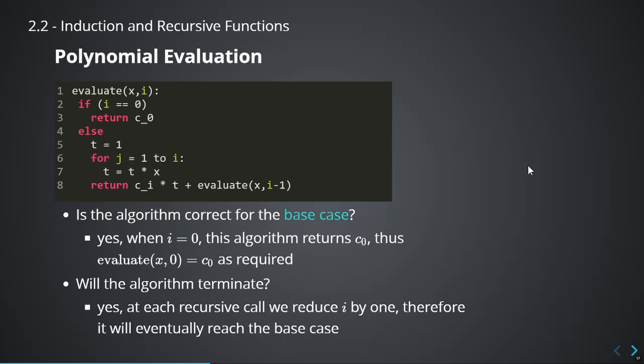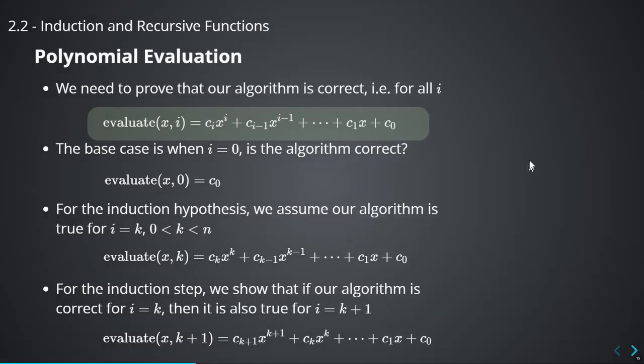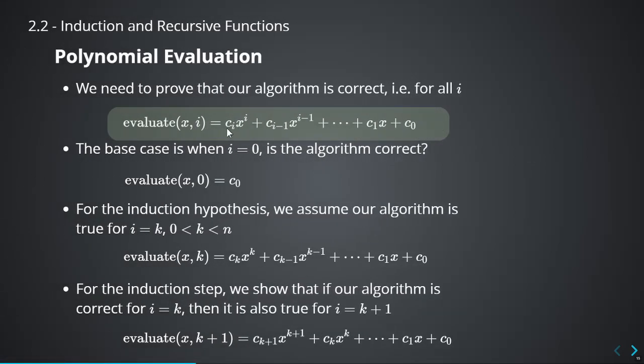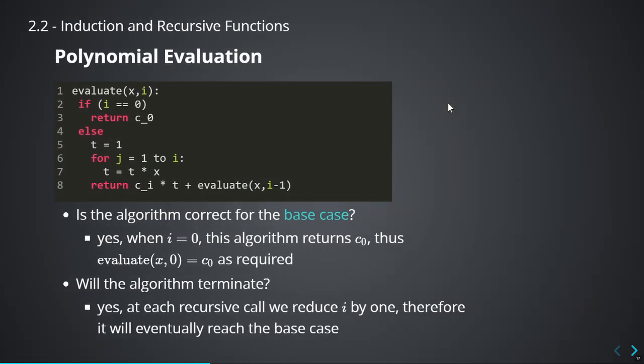For the base case: is the statement correct when i equals 0? When i equals 0, we just want to return the constant term. And when i equals 0, the statement does return just c₀ — everything else would be 0 — so we just return the constant term. The function evaluate(x, 0) is correct; it gives us c₀. Will the algorithm terminate? Yes — because if you give a positive i, we recurse and reduce i by 1 every time, so eventually it reaches the base case i equal to 0, and yes, it will terminate.